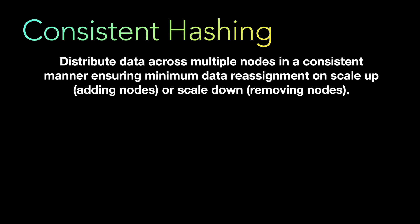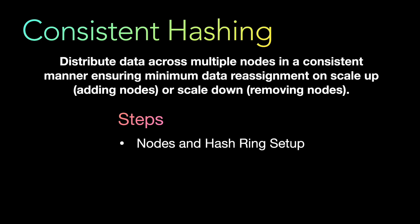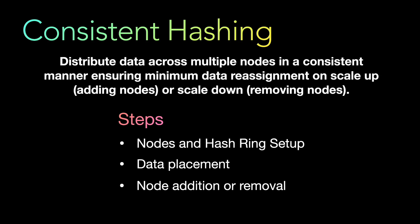How do we achieve consistent hashing? At a high level there are two to three steps. First is to set up the nodes and the hash ring — the setup of the consistent hashing ring and where the nodes will be. Next is data placement: how data gets placed physically in one of these nodes in the hash ring. And then node addition or removal: what exactly happens during scale up or scale down when new nodes are added or existing nodes are removed from the ring.